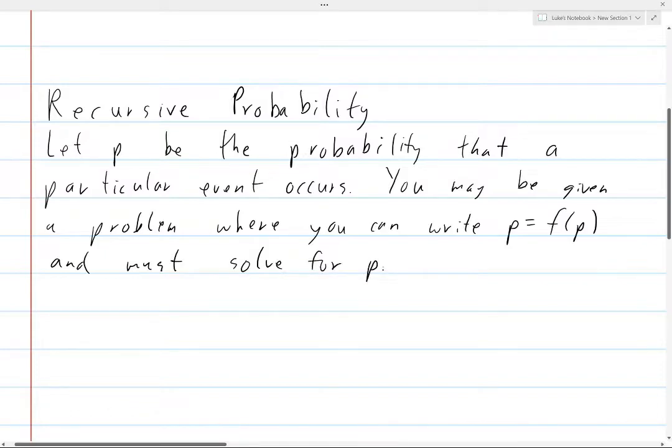So what I mean by this is that there is some scenario in which this scenario that you're discussing will start over, and so what this function f of p does is it explains the particular scenarios that can happen, and it also includes the scenario in which you start over.